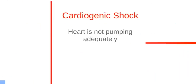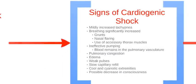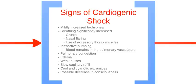Cardiogenic shock occurs when the heart is not pumping adequately. The signs include mildly increased tachypnea, while the work of breathing increases, and the victim may show signs of grunting, nasal flaring, and the use of accessory thorax muscles. Heart pumping is ineffective and blood remains in the pulmonary vasculature, causing pulmonary congestion, edema, weak pulses with slow capillary refill, and cool and cyanotic extremities.